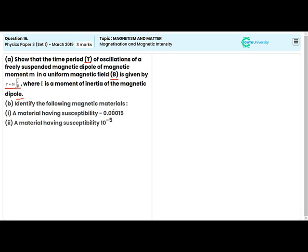Identify the following magnetic materials: a material having susceptibility 10 to the power of minus 5.